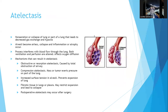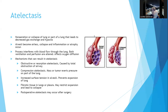Atelectasis is the non-aeration or collapse of a lung or part of a lung that leads to decreased gas exchange and hypoxia. The alveoli must be open for gas exchange — if they collapse and the edges stick together, they become airless, and you get inflammation or atrophy. It interferes with blood flow through the lung, since capillaries surround the alveoli for gas exchange. This affects both ventilation and perfusion, and oxygen diffusion, meaning you're not getting enough oxygen.